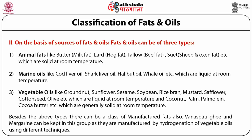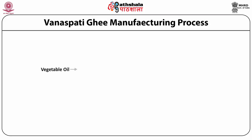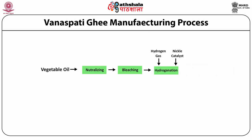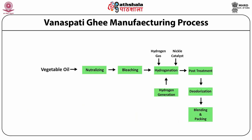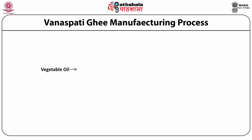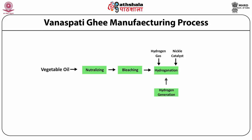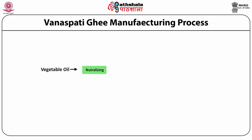Besides the above three types there can also be a class of manufactured fats. Vanaspati ghee and margarine can be kept in this group as they are manufactured by hydrogenation of vegetable oils using different techniques. On screen you can see the flow chart of vanaspati ghee manufacturing process — which is a trans fat. First the vegetable oil is taken, it is neutralized, bleached, and then hydrogenation is done by passing hydrogen gas in the presence of nickel catalyst; then post treatments, deodorization and blending are done, and finally it is packed as vanaspati ghee.